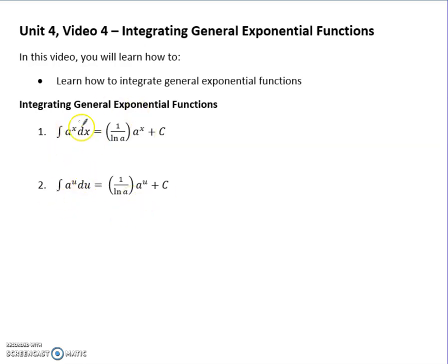And so here's your general rules. If you've got something to a power of x, that's what makes it exponential. That's 1 over ln of your base times your base to the x. Or again, if it's a u, if there's a function in there, same idea, but with u, and of course plus c.